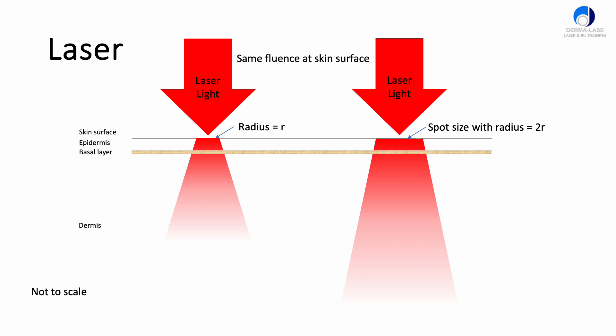Let's say it was 10 joules per square centimeter, each of these pulses. One's got a radius of R, the other's got a radius of 2 times R. To maintain that fluence in the bigger spot, we need to increase the energy from the laser by a factor of 4, because the bigger spot size is twice the radius. The area is the square of the radius.